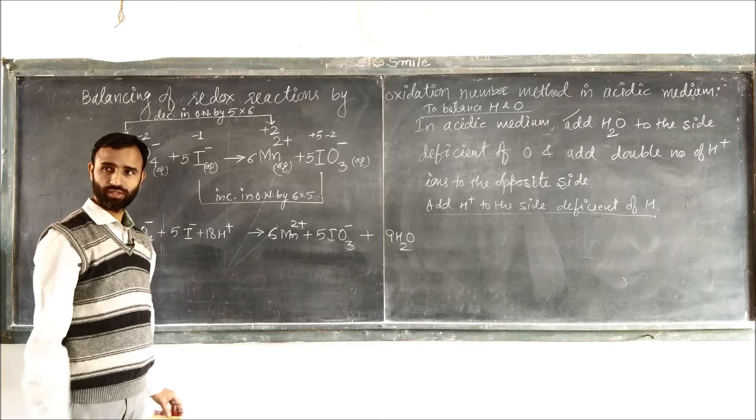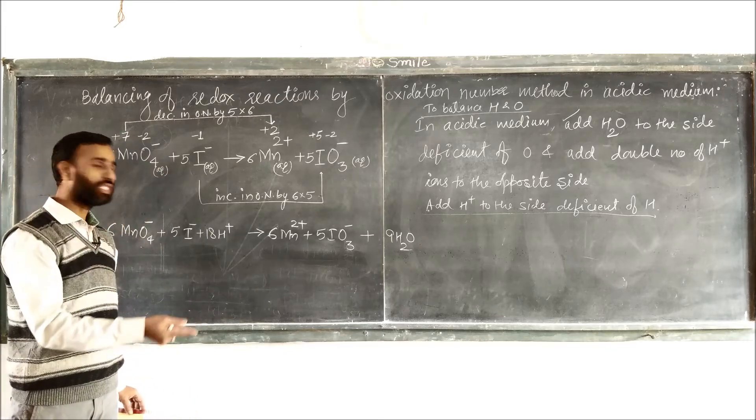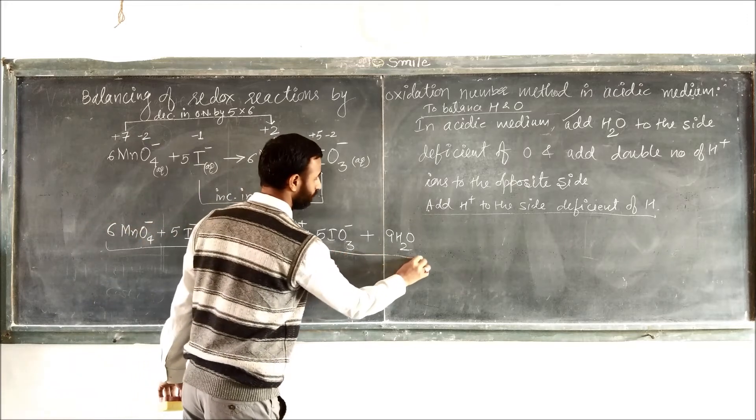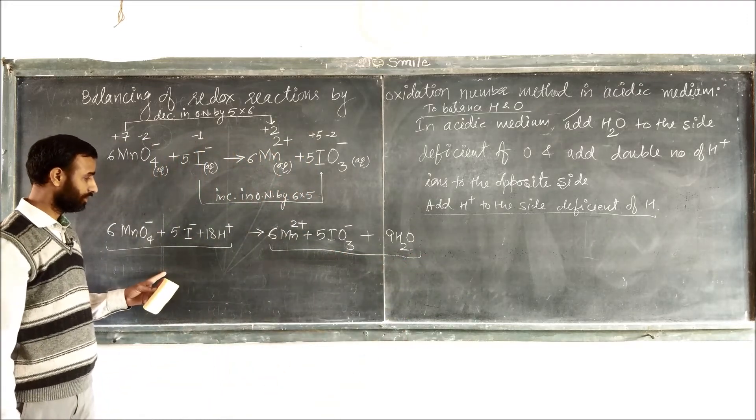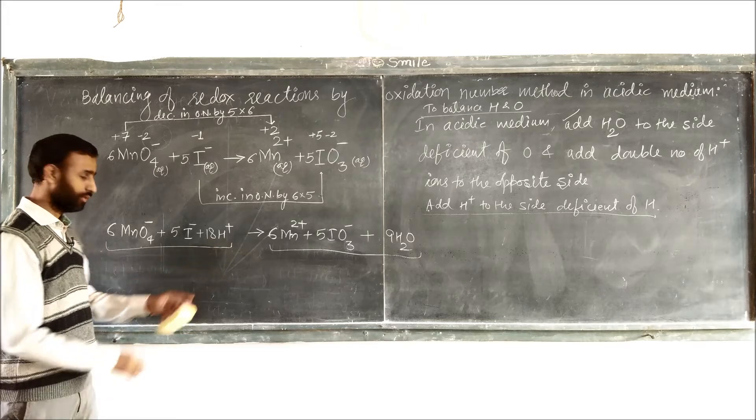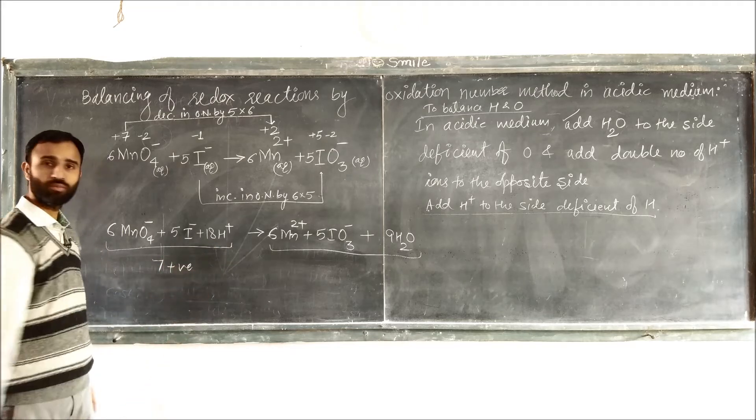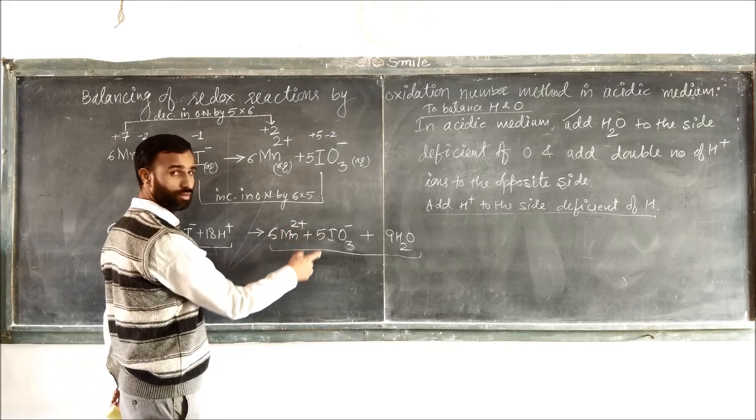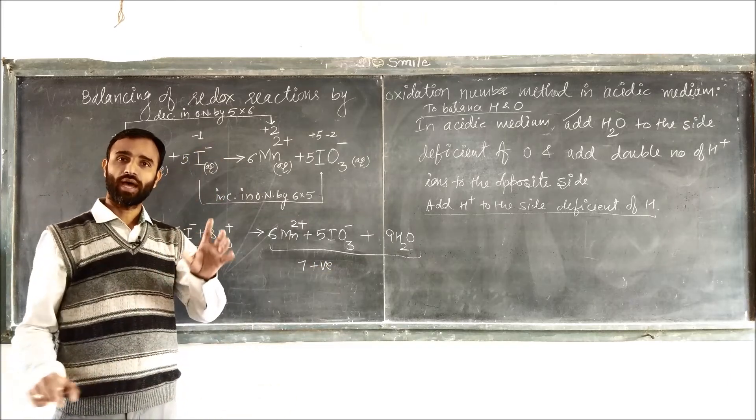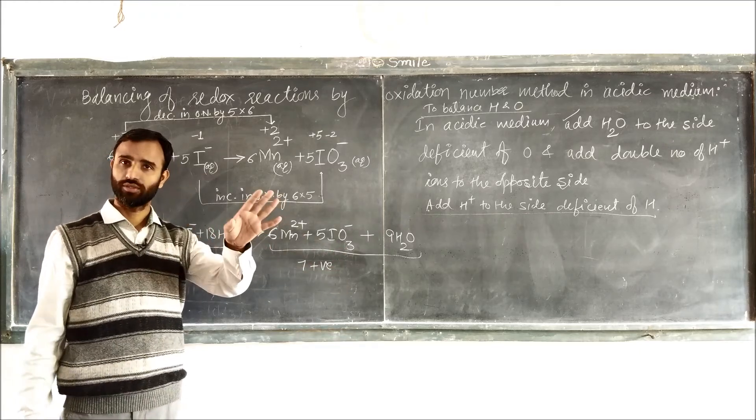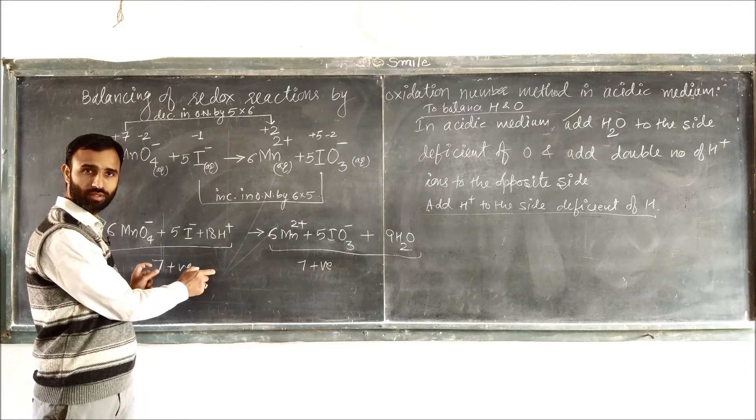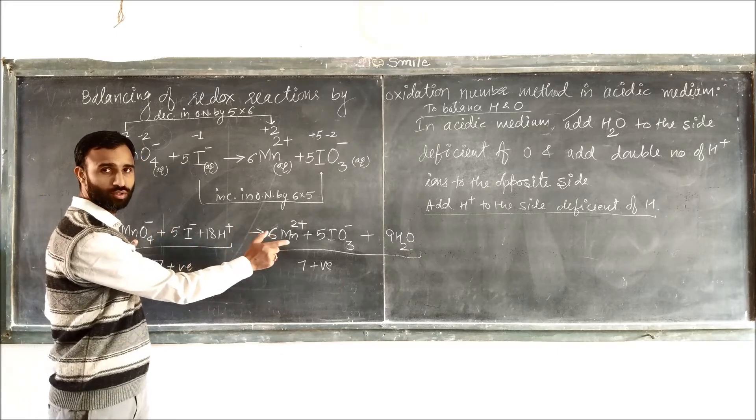Now it is balanced equation. Now to recheck, to verify, just see the total charge on both sides. Total charge on this side is 11 negative, 18 positive, 7 positive. On other side again 7 positive. So rule is actually to balance the atoms and to balance the charge on both sides. Number of atoms of each type and charge should be same.